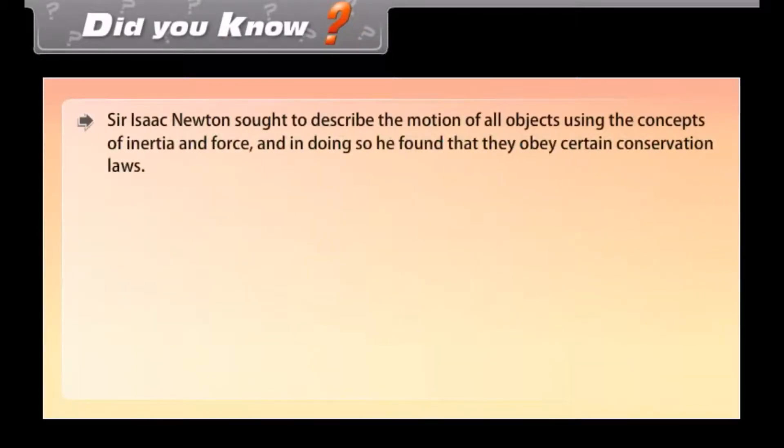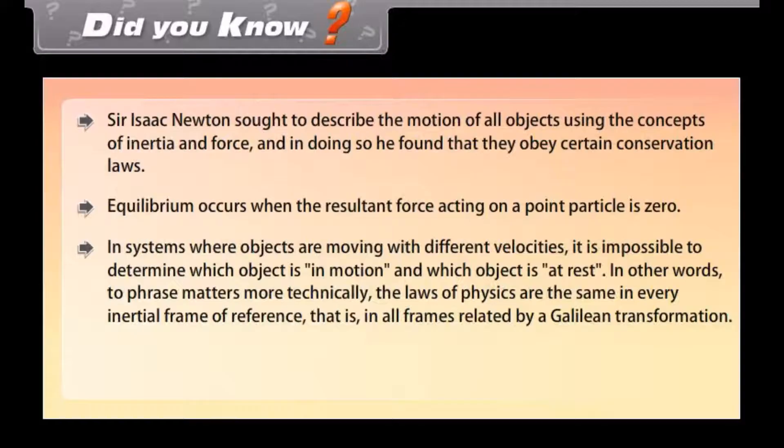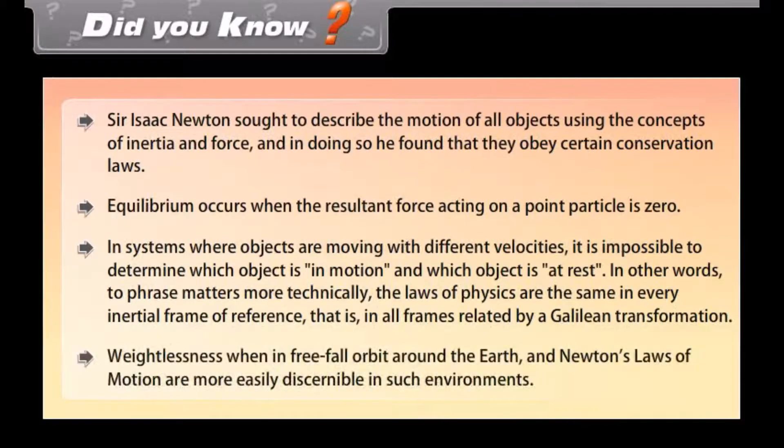Did you know? Sir Isaac Newton sought to describe the motion of all objects using the concepts of inertia and force, and in doing so he found that they obey certain conservation laws. Equilibrium occurs when the resultant force acting on a point particle is zero. In systems where objects are moving with different velocities, it is impossible to determine which object is in motion and which object is at rest. In other words, to phrase matters more technically, the laws of physics are the same in every inertial frame of reference, that is, in all frames related by a Galilean transformation. Weightlessness when in free-fall orbit around the earth and Newton's law of motion are more easily discernible in such environments.